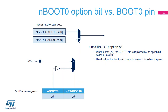The state of the boot 0 pin selects which boot address is used on the condition that the N SW boot 0 option bit is equal to 1. When the N SW boot 0 option bit is equal to 0, the state of the boot 0 pin is ignored and replaced with the state of another option bit called N boot 0. In this case, the port H3 pin, which supports the boot 0 functionality, becomes a general-purpose I/O.